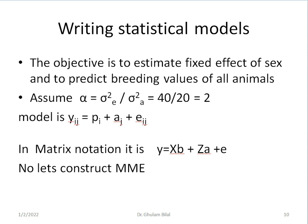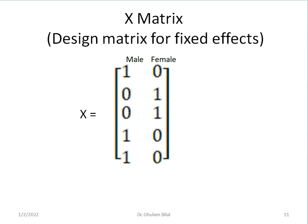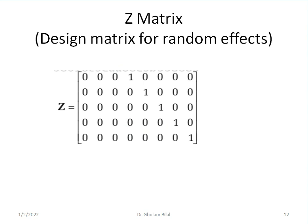Our objective is to estimate fixed effect of sex and to predict breeding values of all animals for weaning weight gain. We assume that alpha, sigma square E divided by sigma square A, is 40 divided by 20 equals 2. Our model is Y_ij equals μ_i plus A_j plus E_ij. In matrix notation: Y equals XB plus ZA plus E. Now let's construct MME. Our X matrix, design matrix for fixed effects, first column is for male and second column is for females. Next is our Z matrix for random effects. First three columns are zero because animals do not have records. Next five columns have ones in it.